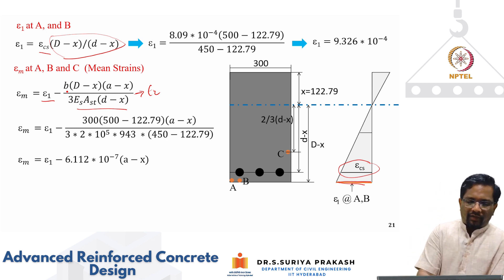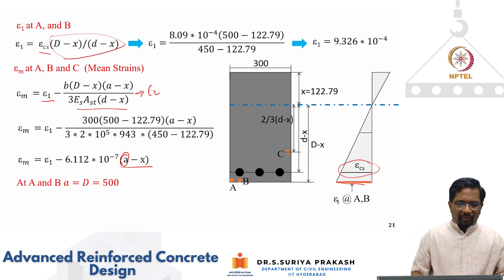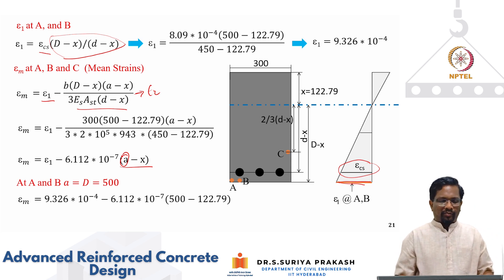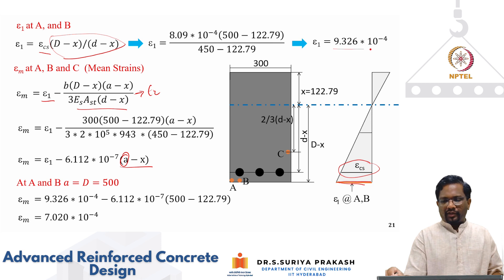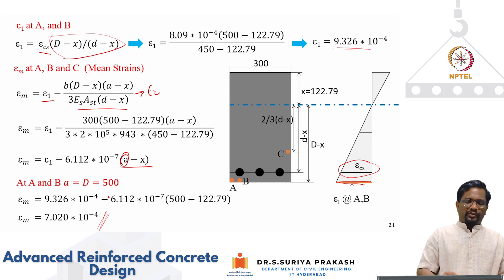That works out to be B into capital D minus X times A minus X divided by 3 ES AST times D minus X. If you plug in all these equations for all the points A, B, C, I can calculate in terms of A minus X. Only thing is A is going to keep changing. For A and B, the small a is actually capital D. But for point C, A is actually, it is basically, you have to calculate X plus two third of D minus X. For A and B, A is equal to D. If you substitute these values, you get epsilon M as 9.326 into 10 to the power of minus 4 minus if you substitute for all the values, then you get the value as 7.020 into 10 to the power of minus 4. We get this mean strain at A and B is not the cracked section value which is 9.326, but we are reducing it by some magnitude to account for the contribution of concrete in tension. Your mean strain has reduced from epsilon 1 of 9.326 to 7.020.